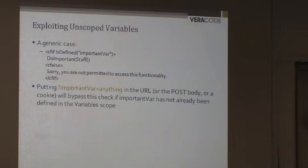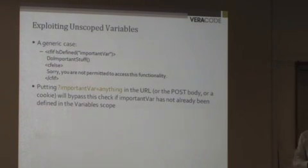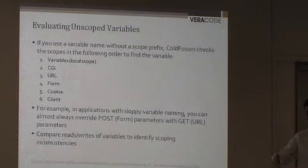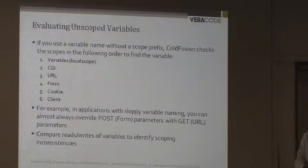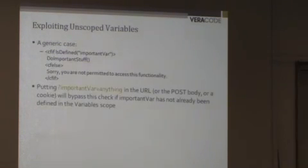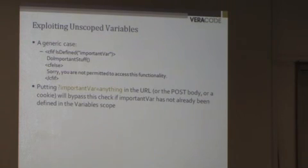But because that variable is unscoped, you can just put into your query string, importantVar equals anything you want. And when that comes to be evaluated, if you go back to that search order, the first thing it's going to do is look through in that order. And once it gets to number three, it's going to say, okay, if the variable's in the URL, it does exist, is defined, will evaluate to true. And then it will do important stuff, whatever happens to be in that function. So you're essentially bypassing a check here because the variable is unscoped.